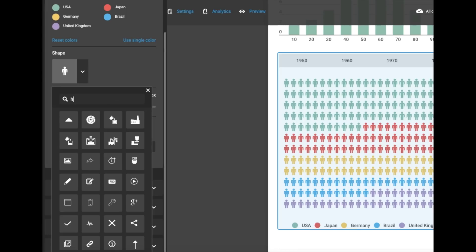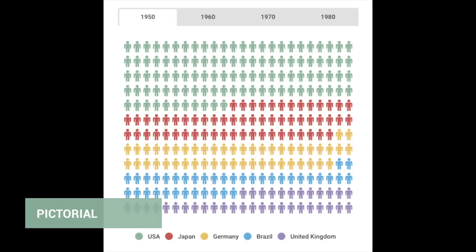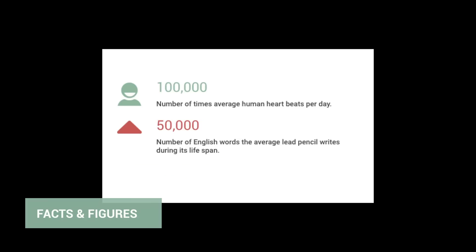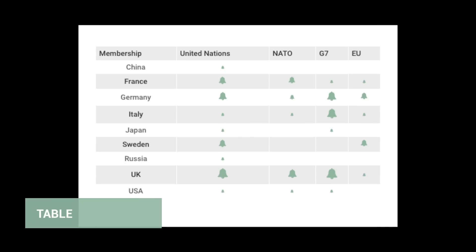Using icons is a very effective way to visualize your data into an infographic, and can be done in various ways: pictorial, size comparison, facts and figures — which are bullet points of an icon, a fact, and then a descriptive text — or use them in tables, either as a true or false, or combined as a size comparison.